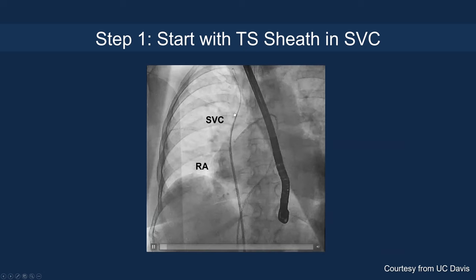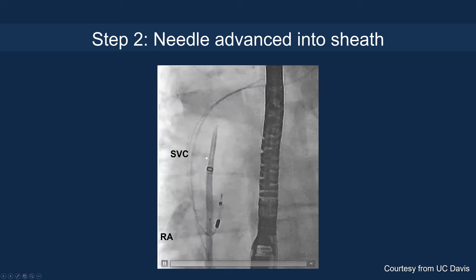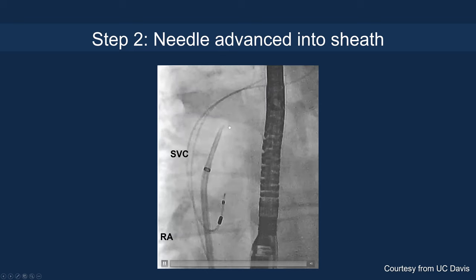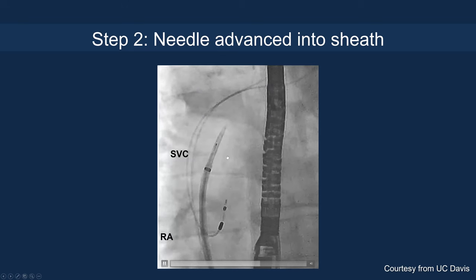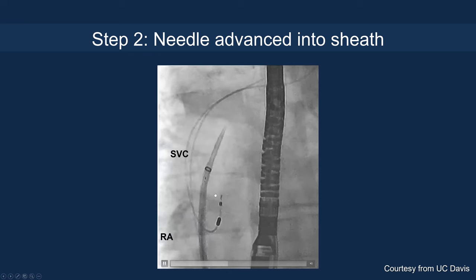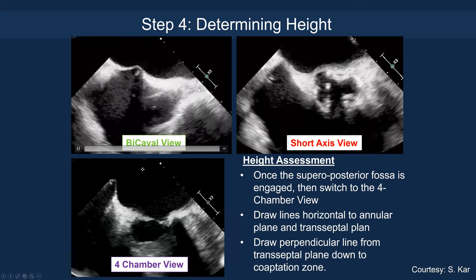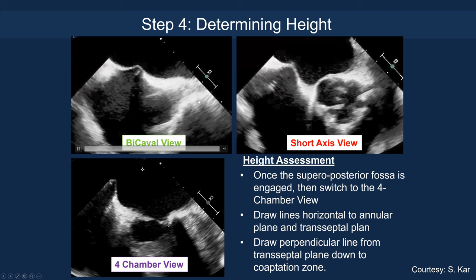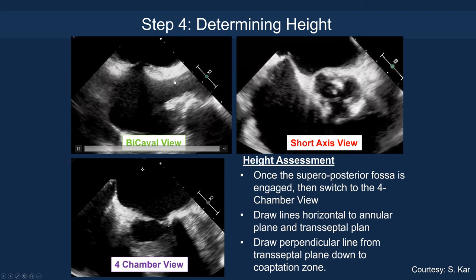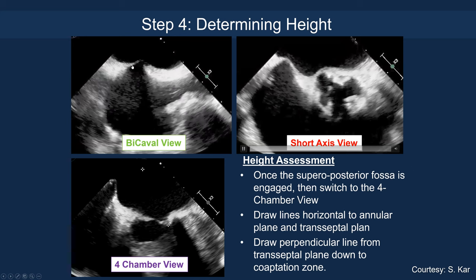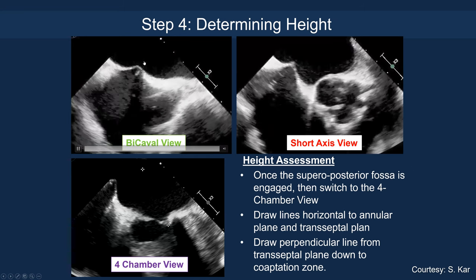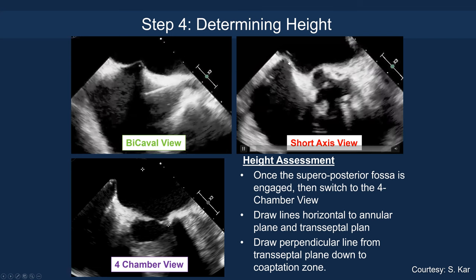This shows the transeptal puncture site with the transeptal sheath in the SVC using a 0.032 floppy wire. You advance the needle — do not expose the needle tip outside the sheath to avoid injury, as this provides more support to the sheath. You then come down to the fossa ovalis and you can see the drop, which tells you that you've landed on the interatrial septum. You confirm this on the bicaval view, essentially going along the reverse aortic root axis, and you see the tenting on the mid and posterior septum.